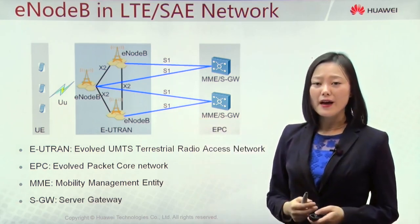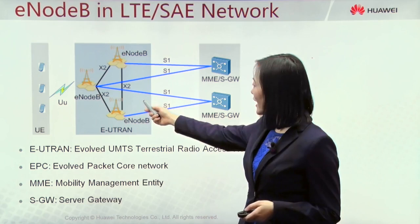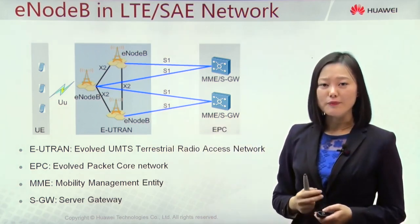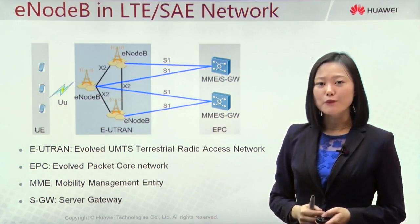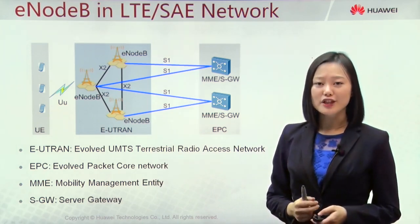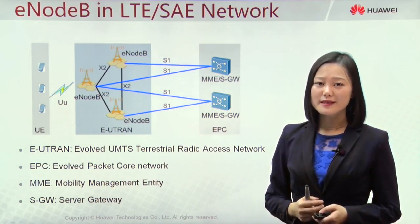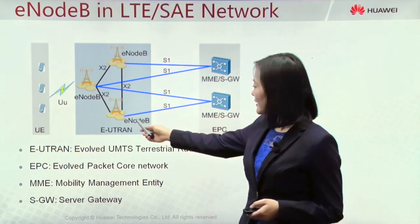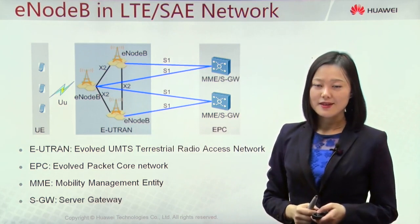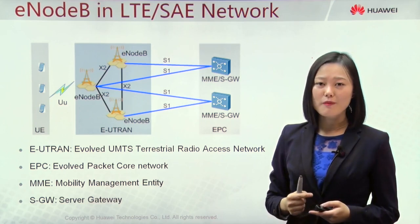Compared with 2G and 3G networks, here we don't have RNC, BNC, or BSC anymore. So the functions of BSC and RNC are moved to E0B, like the radio resource management and connectivity to EPC. Another difference is that E0B can interconnect with each other via the X2 interface, so they can exchange information and by this we can support more features.